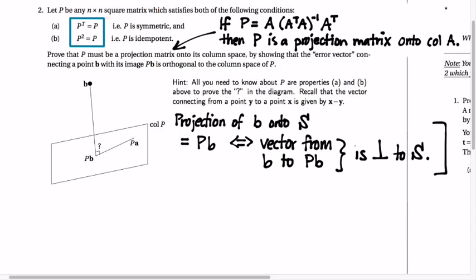...column space, if you'll remember, consists of everything which can be written as P times something. It's a set of all P times V for all vectors V. In this case, those Vs would be in Rn because P is an n by n matrix. So everything in this subspace has the form P times something, which is why I've labeled this second thing as Pa.